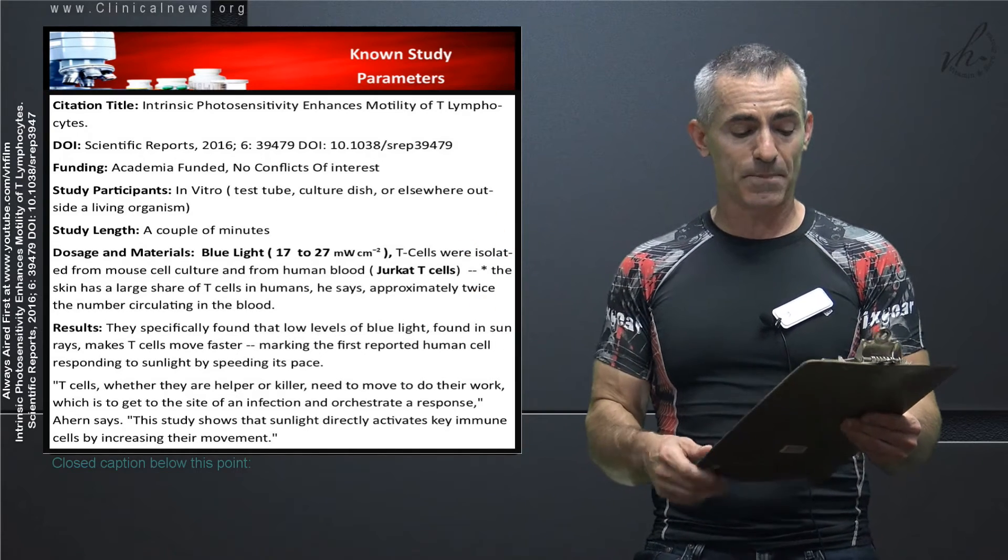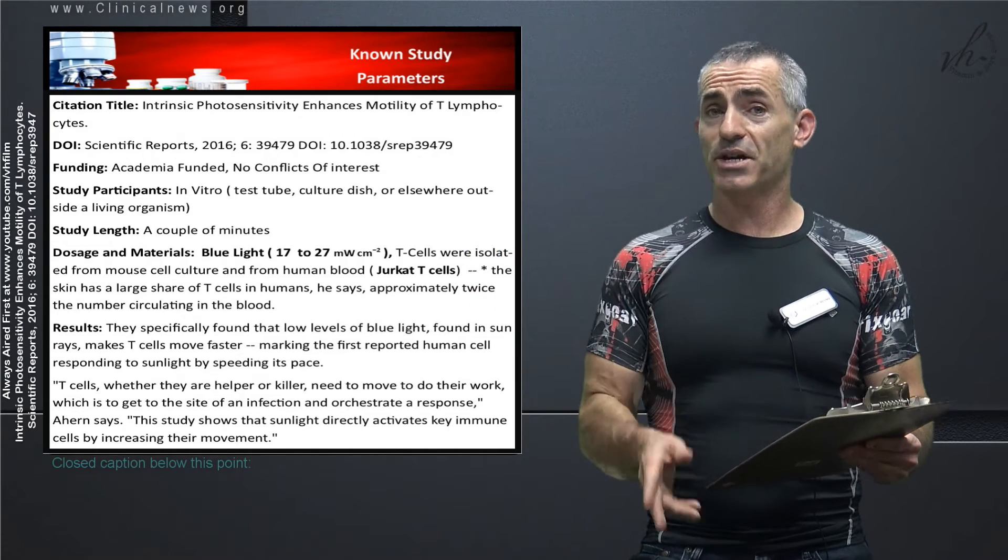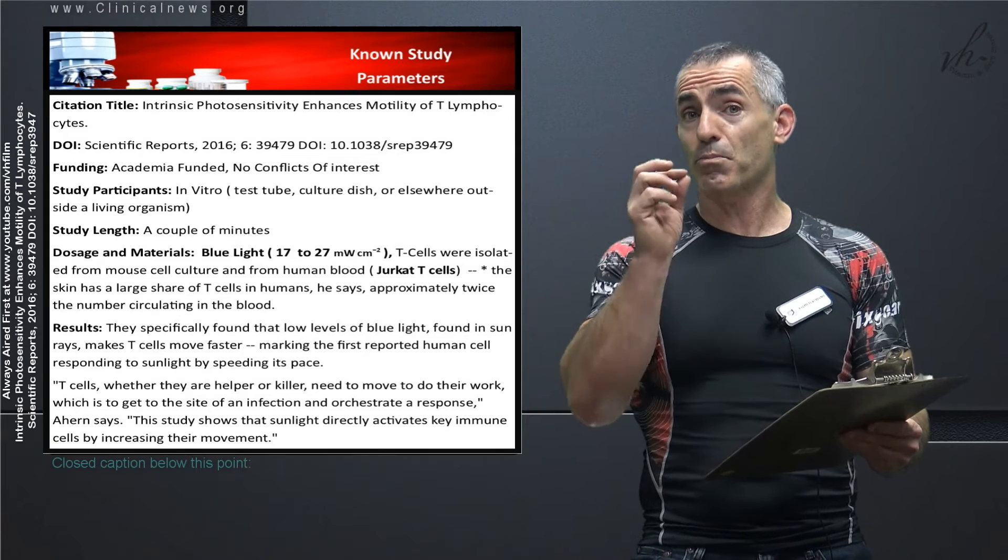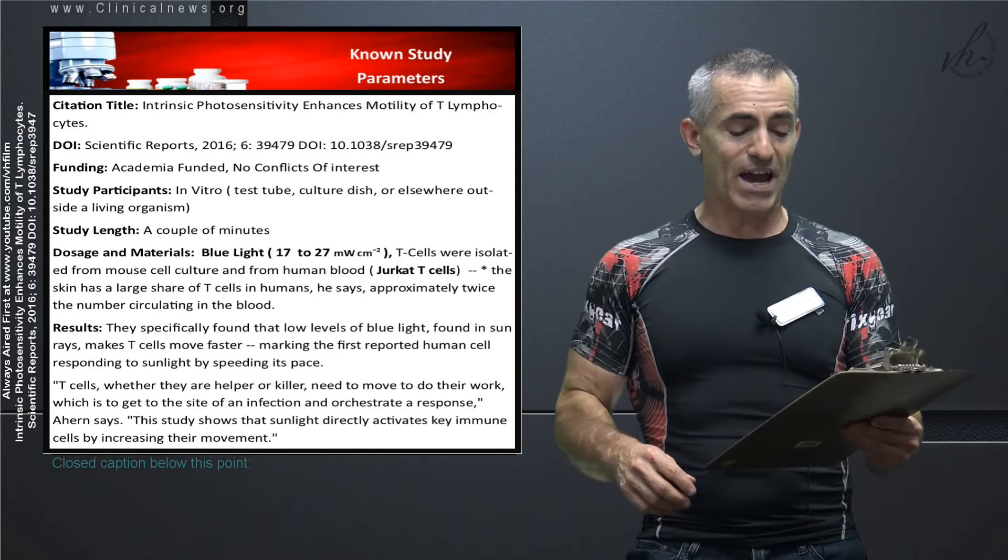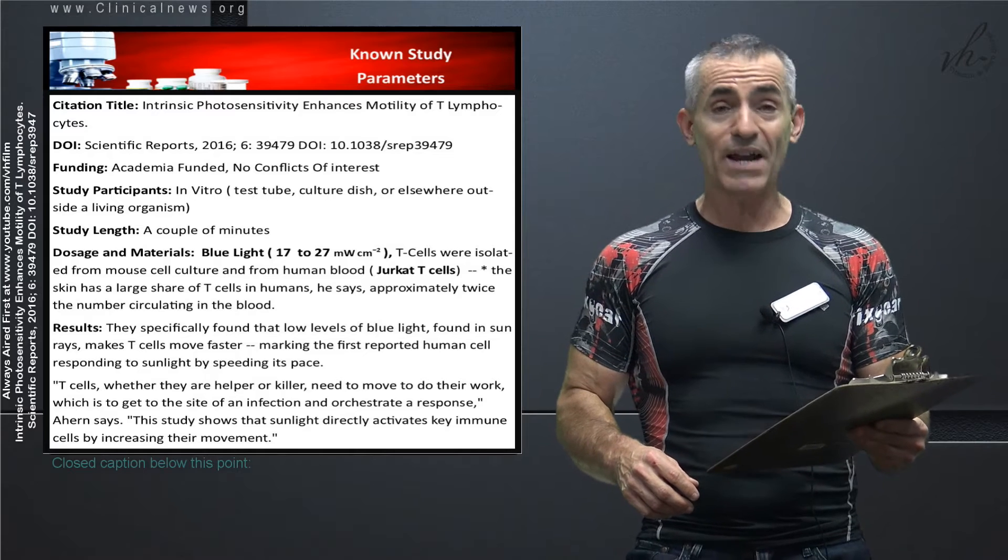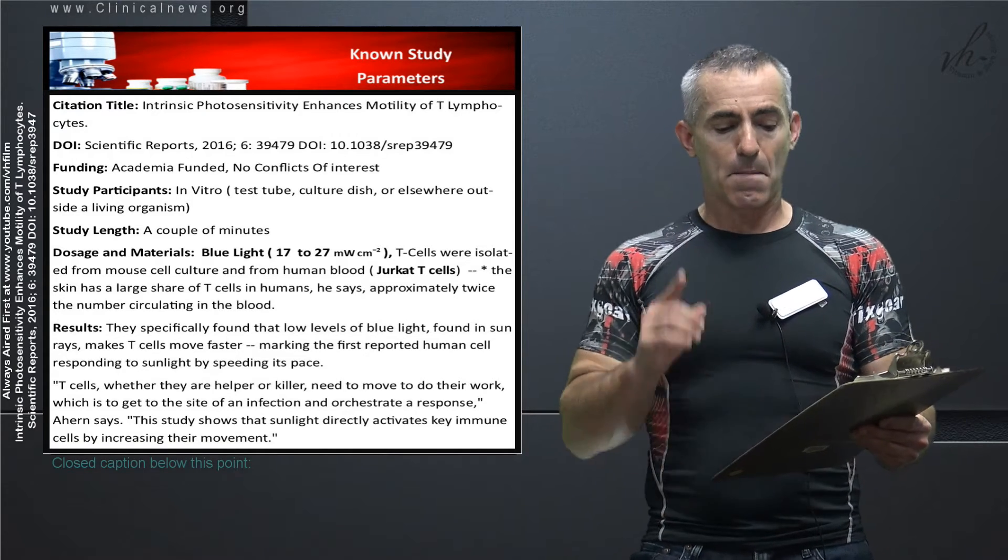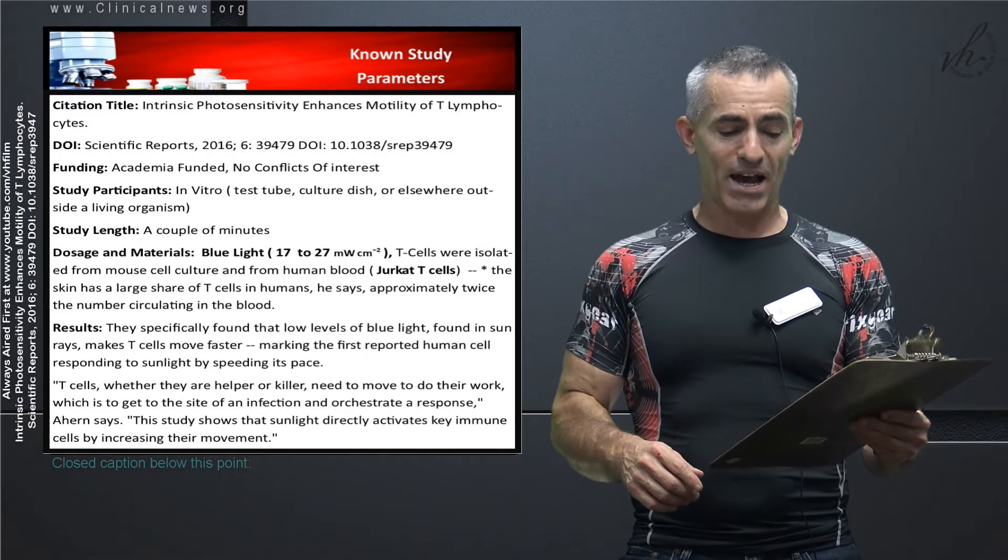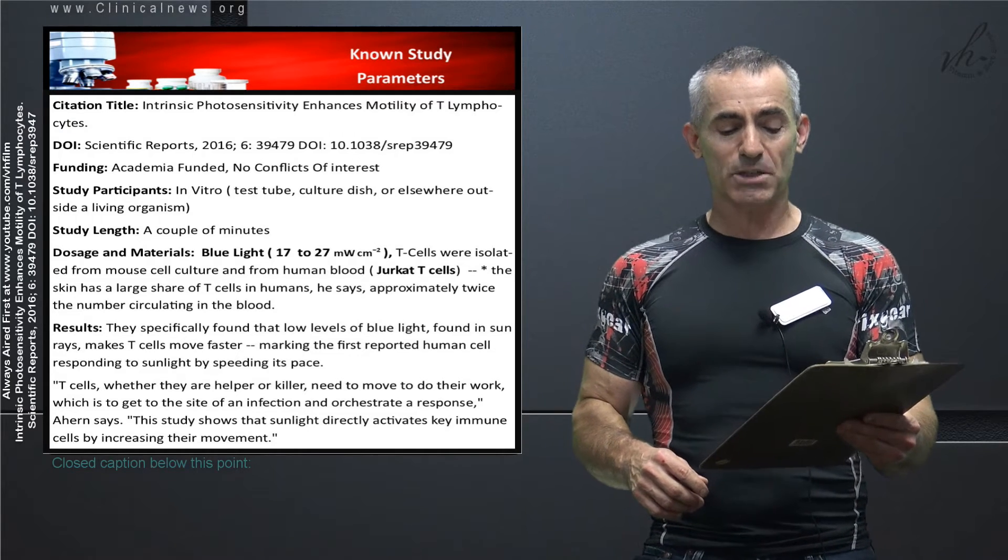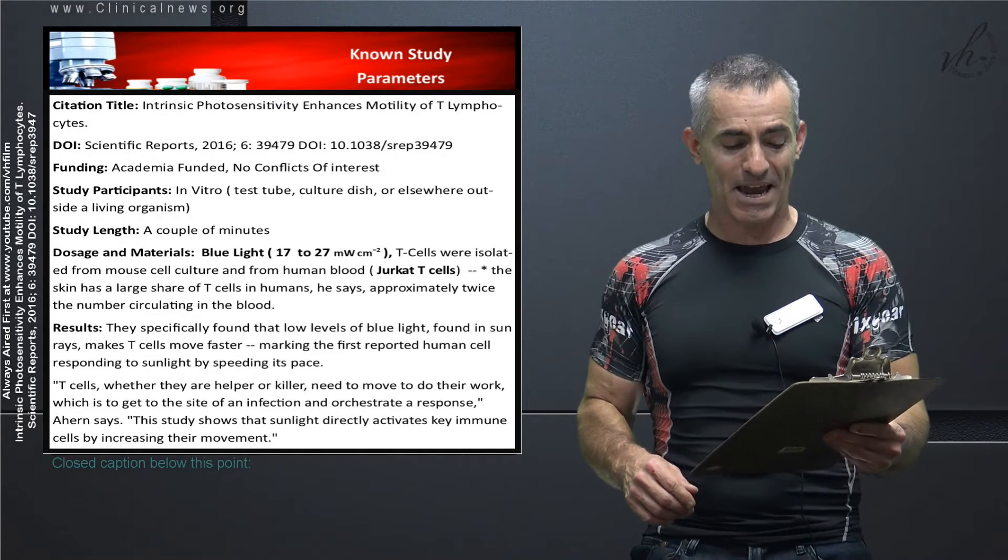Results, and to reiterate or basically read the results verbatim from the researchers: they specifically found that low levels of blue light found in sun rays, independent of vitamin D, make T cells move faster, marking the first reported human cell responding to sunlight by speeding its pace.